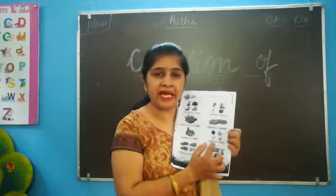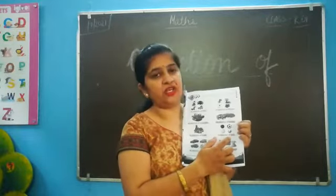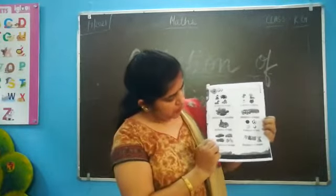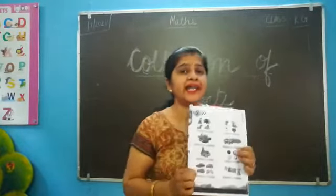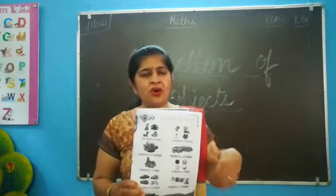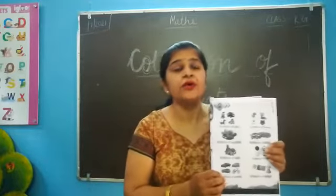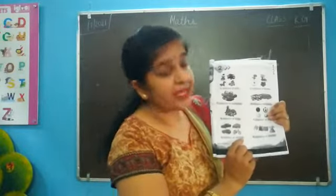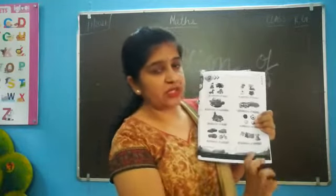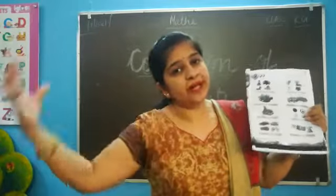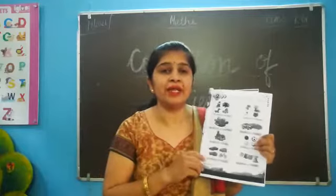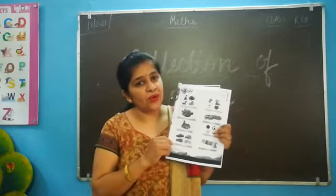Khub saari balls hain aap ki — kya bolenge? A collection of balls, collection of balls. Or, bahut saari gaariyan khari — kahi pa bhi parking ho hai. Like buses, trucks, or khub saari vehicles khaari — toh usse kya bolenge? Collection of vehicles. Now, collection of clothes. Khub saari kapdhe ho gai, unhe tikali lagai nil hai — toh usse kya bolenge? Collection of clothes.